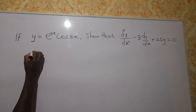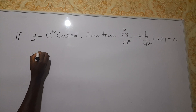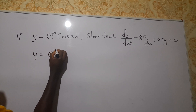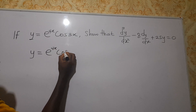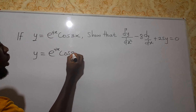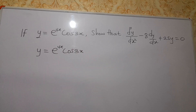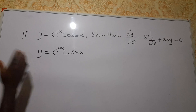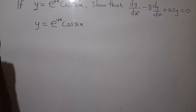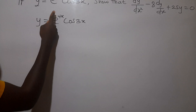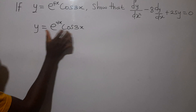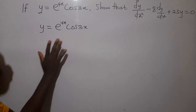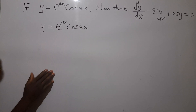Our y is giving us e to the exponent 4x times cos(3x). Now, before we find our first derivative, remember how this is: two functions multiplying each other means we need to use the product rule to differentiate this.